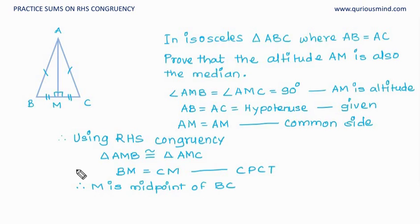And if M is the midpoint, then AM, the line segment joining from this vertex A to the midpoint of opposite side BC, is going to be the median.